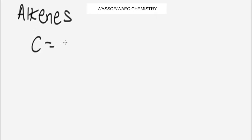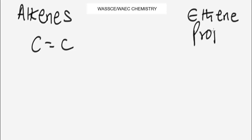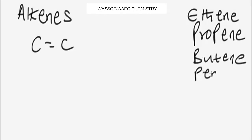The first four alkenes in the family include: we have ethene, we also have propene, we also have butene, and we have pentene. So these are the first four alkenes — ethene, propene, butene, and pentene. They are the members of the first four alkenes family.